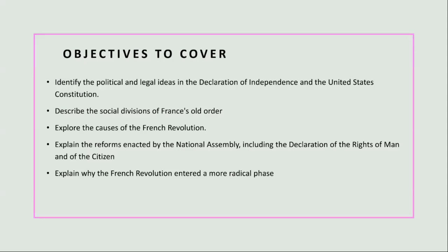In response to the crisis, the National Assembly was formed in 1789. This representative body took various transformative measures, including the abolition of feudal privileges, which freed the peasantry from serfdom, and the issuance of the Declaration of the Rights of Man and of the Citizen. This declaration proclaimed equal rights, liberty, and property rights, embodying the principles of the Enlightenment. These reforms aimed to establish a constitutional monarchy and limit the power of the monarchy, which had traditionally been absolute. The Assembly sought to create a more just and equitable society based on the principles of liberty and equality.